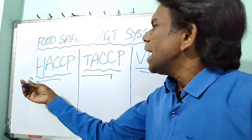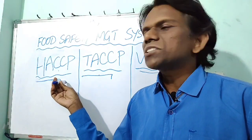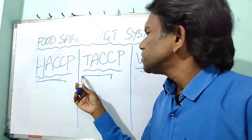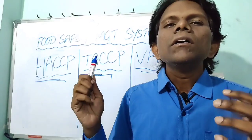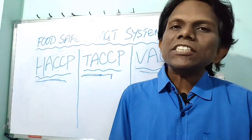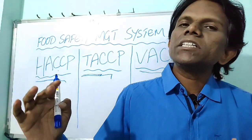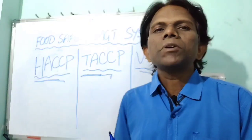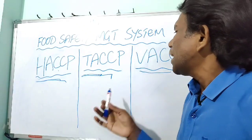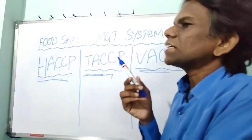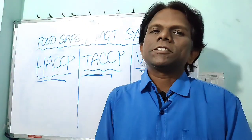HACCP addresses Food Safety hazards. Whereas TACCP addresses Threats for the Food Business — specifically purposeful, intentional threats. And VACCP addresses the kinds of food fraud affecting the Food Business.